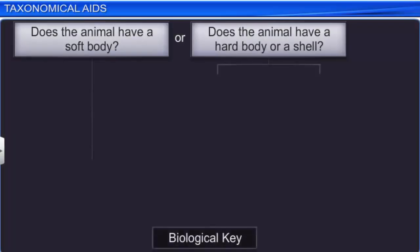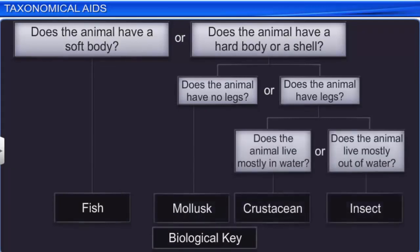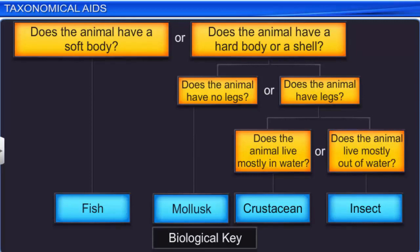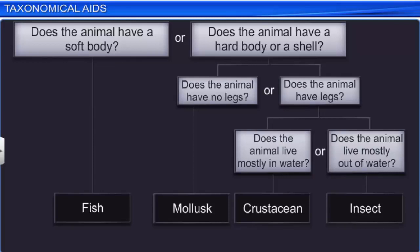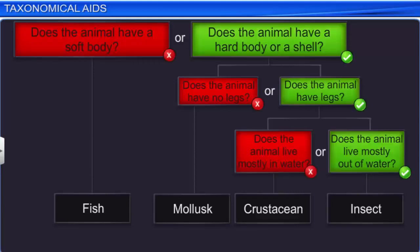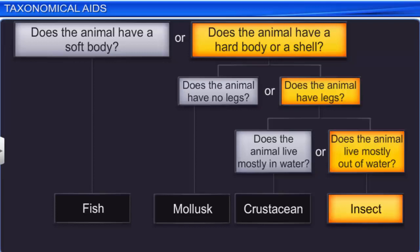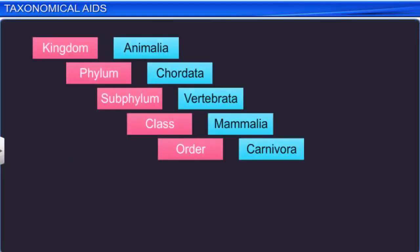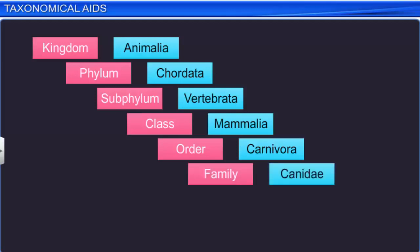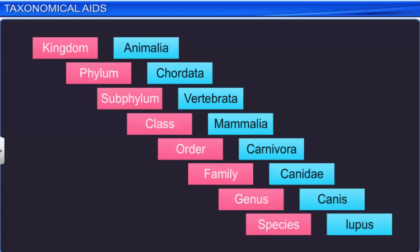A biological key is another taxonomical aid used for the identification of plants and animals. It is a list of questions that help identify and classify a living organism. Each question presents contrasting characters of an organism in a pair called a couplet. To classify the organism, the character similar to the organism has to be chosen. So in a couplet, one character is accepted and the other is rejected. Answering the questions in this analytical manner helps in identifying the organism. Separate taxonomic keys are required for each taxonomic category such as family, genus, and species, for the purposes of identification.